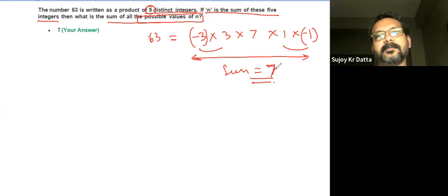So n has only one possibility—that's 7 itself. So the sum of all possible values of n will be 7 only. This was a theta question, so you write the answer as 7.